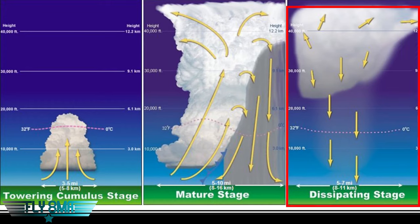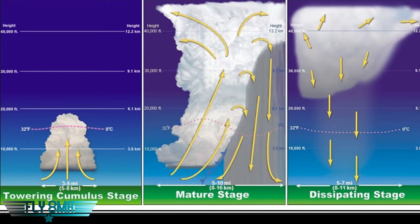Finally, you have the dissipating stage. This is characterized mostly by downdrafts — very strong downdrafts. The downdrafts are so strong that they cancel out any updrafts or rising air. That forces the precipitation to taper off because those downdrafts are so strong coming down and allow no warm moist air to rise, so you cannot keep feeding the storm. You wind up with precipitation eventually trailing off and stopping. That is the dissipating stage — mostly downdrafts, very substantial downdrafts, up to speeds of 6000 feet per minute.